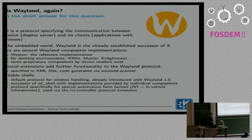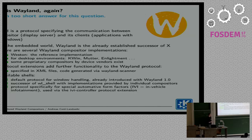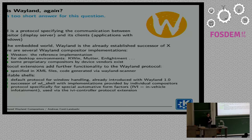Those protocol extensions are quite defined in a well-defined standard. Then you have some tooling that creates boilerplate code and connects it to your programs, and then you can simply use it. There are different available shells, which is kind of which language you speak to your compositor. The default one is the WL shell, introduced in Wayland 1.0. We also have the XDG shell, which is its successor. And in the automotive field we have especially the IVI shell extension, which gives you a small interface for how you can communicate with your compositor.